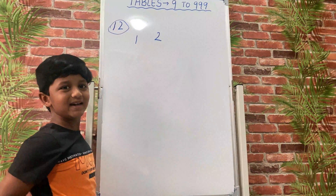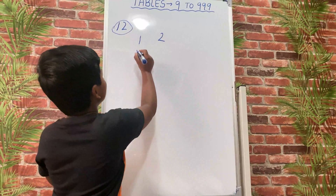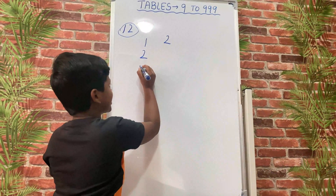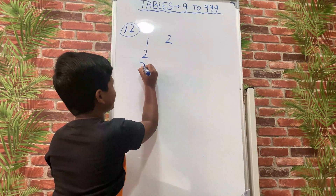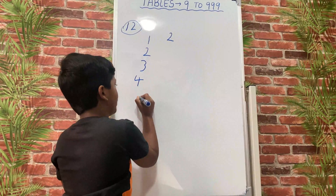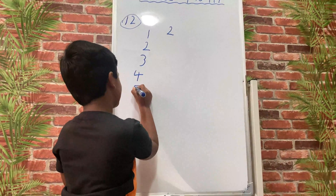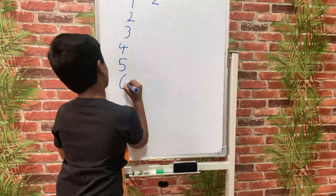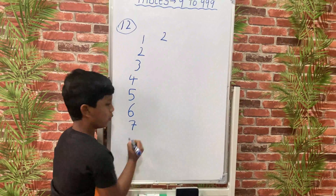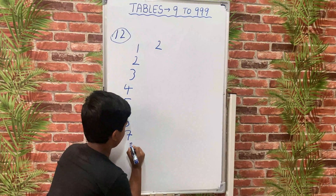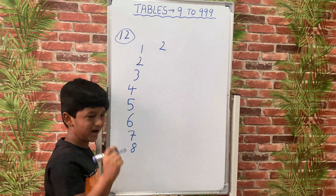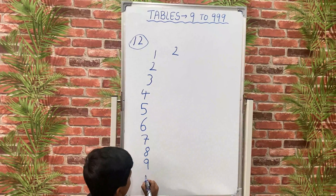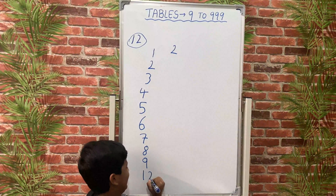1×1 is 1, 1×2 is 2, 1×3 is 3, 1×4 is 4, 1×5 is 5, 1×6 is 6, 1×7 is 7, 1×8 is 8, 1×9 is 9, and finally 1×10 is 10.